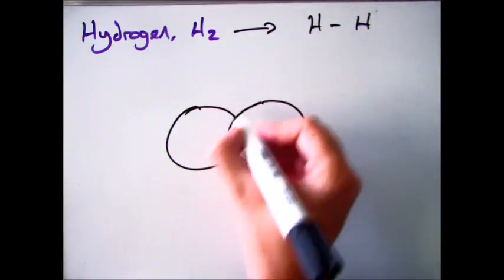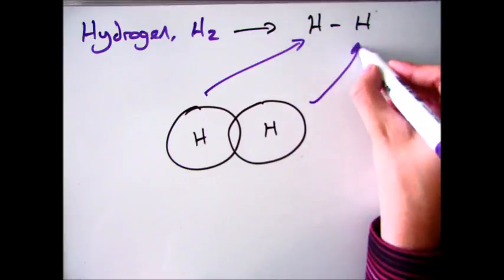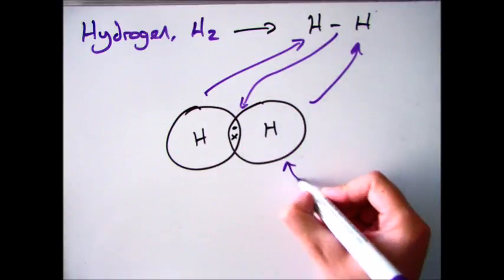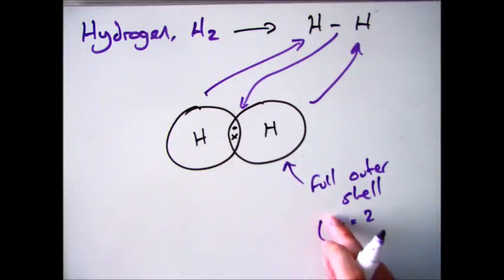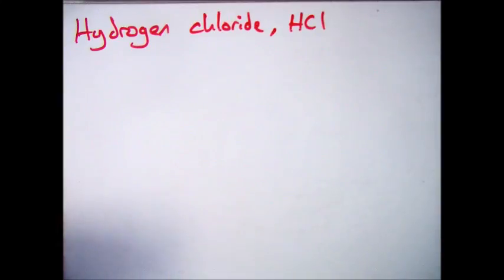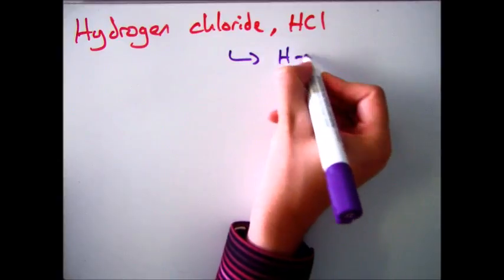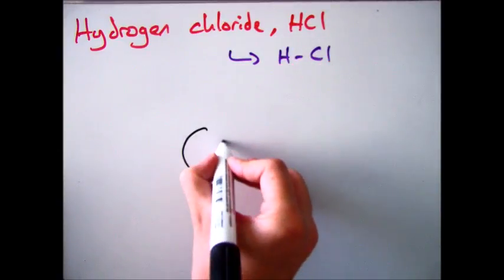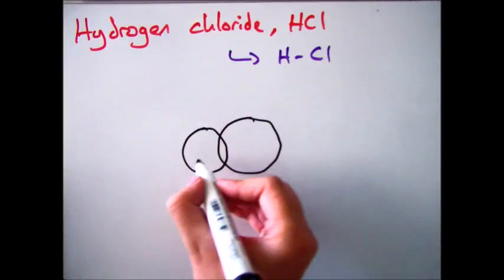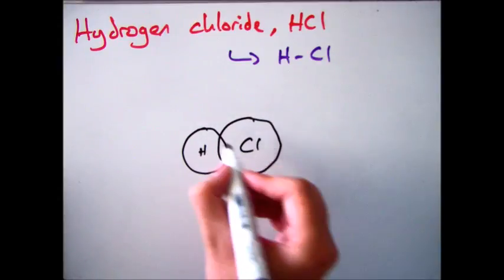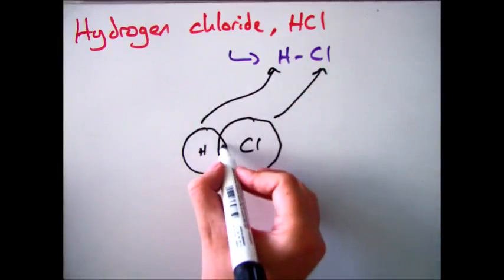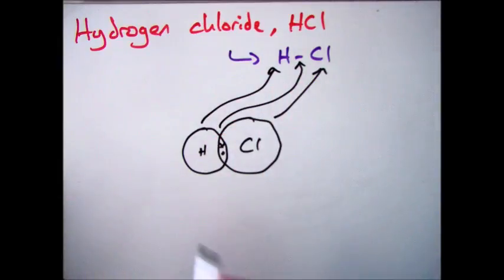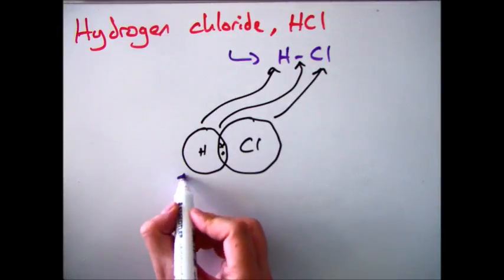So let's go back to hydrogen. We knew hydrogen was H2, with one single bond. So you draw both atoms overlapping, and you put one single pair of shared electrons in there. If we have a look at hydrochloric acid, we know that's one hydrogen bonded to a chlorine with a single bond. So we draw our circles overlapping again, and then put in our single pair of shared electrons, which represents our bond.